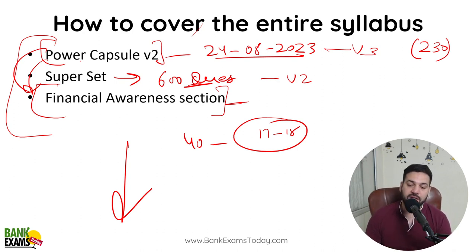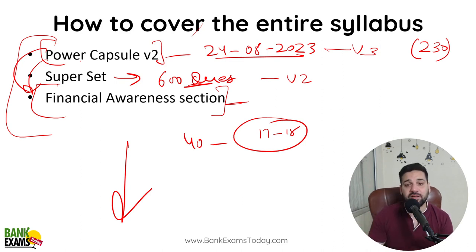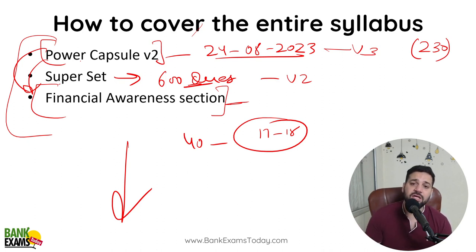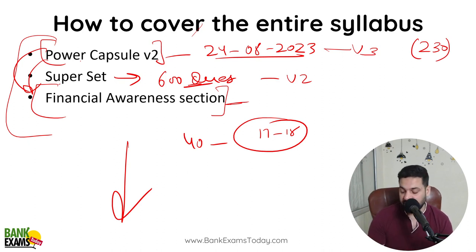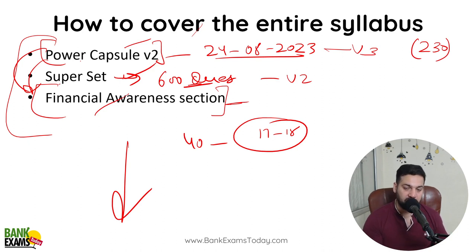Starting with the Superset will show you whether you actually know the topics or not. If you get 3-4 questions wrong, it means you need to study that topic. For example, attempt 25 Negotiable Instrument questions — if you don't understand, then go study, then come back. If you can't do Priority Sector Lending questions either, same approach. That's a great strategy for the last week: start with the Superset, and if you're not understanding, move to the Power Capsule and Financial Awareness section.